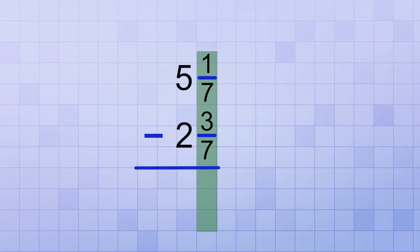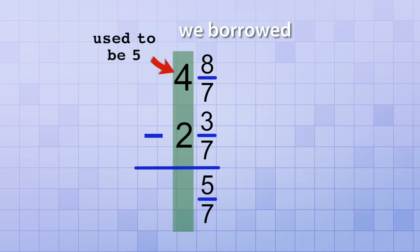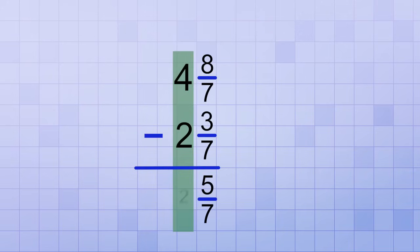In this example, we do that by changing the whole number part into 4 plus 1 and then changing 4 plus 1 into 4 plus 7 over 7. And finally, we can combine that 7 over 7 with the 1 over 7 to get 8 over 7. Now, the fraction on top is big enough to subtract 3 over 7 from. 8 over 7 minus 3 over 7 is 5 over 7. And then we just need to subtract the whole number parts. The top whole number used to be 5, but we borrowed from it, so now it's 4. 4 minus 2 equals 2, so our answer is 2 and 5 sevenths.